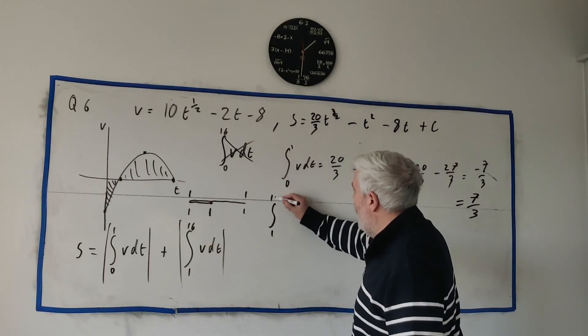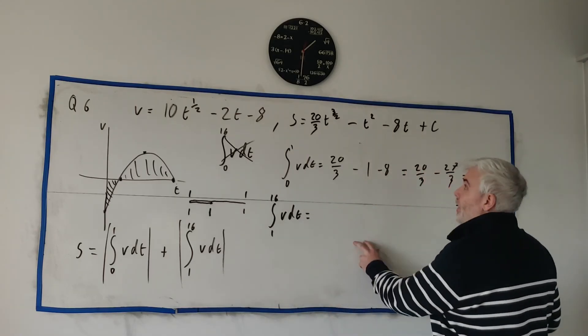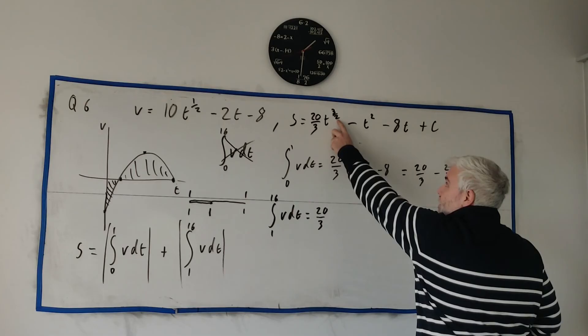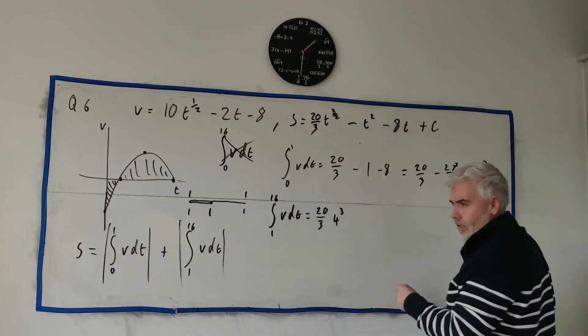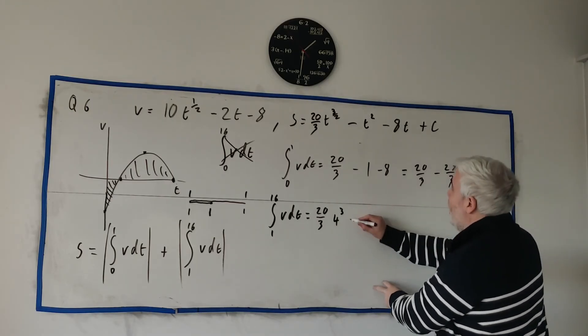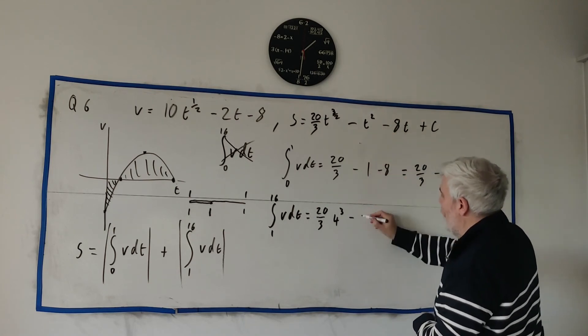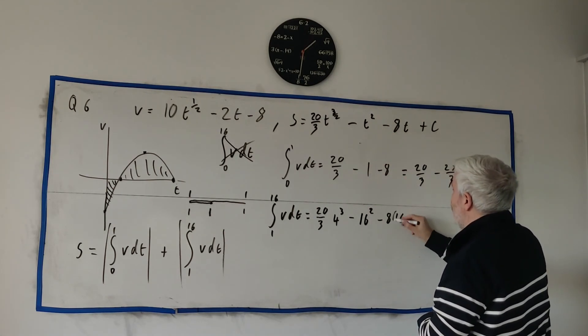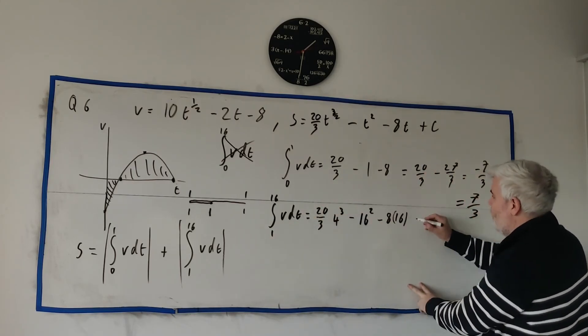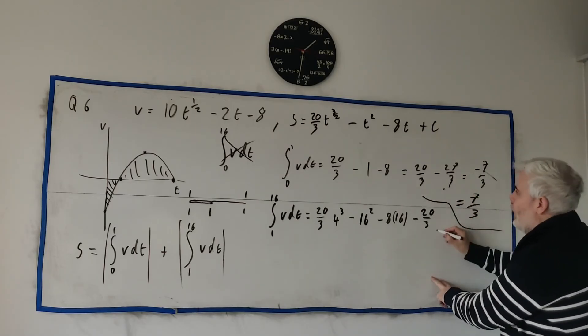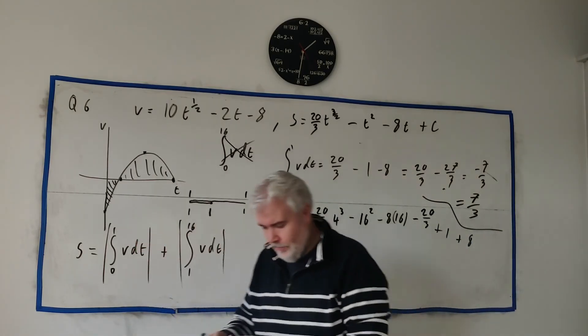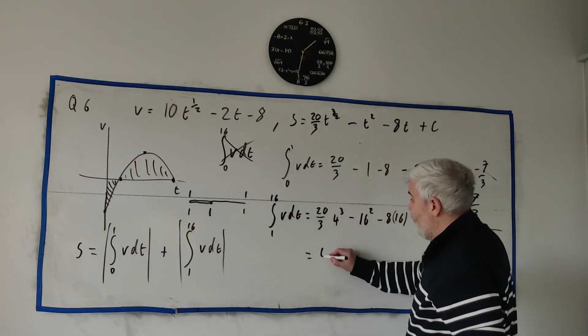The second integral would be the integral between 1 and 16 vdt. We put in, let's see, put in 16. It's going to be a lot harder here. It's going to be 20 over 3. Let your calculator do most of this work. 16, the square root of 16 is 4. And 4 cubed is, god I don't know, 16 times 4 is, does it really matter, 64 I think? We'll let a calculator do all this first. Then minus 16 squared, yeah 16 squared minus 8 times 16. And then we're going to take away when we put 1 in. And that's actually this guy up here, so we don't have to do that again. So minus 20 over 3, oops, running out of room here. Minus 20 over 3 plus 1 plus 8. Put all that into a calculator. Be careful about it, obviously. Do it a couple of times. Double check your work. But I get 45 for this second one.